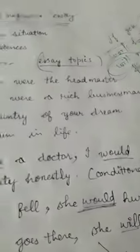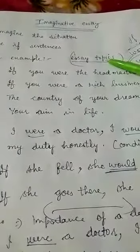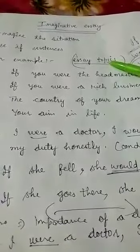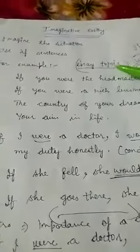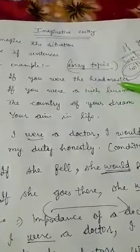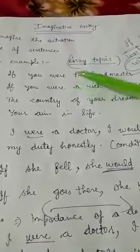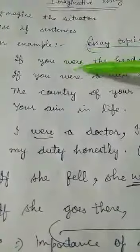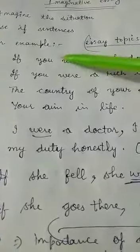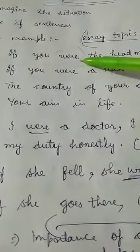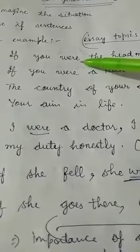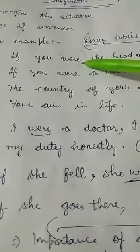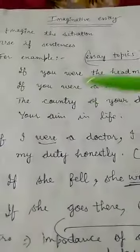If sentences are going to be used here to imagine the situation. For example, here are a few essay topics — just have a glance and you will understand the meaning. 'If you were the headmaster' — you are not now, but in the coming future you can be. So 'were' here is not indicating past tense; it indicates future tense. Future means the event might take place in the future.